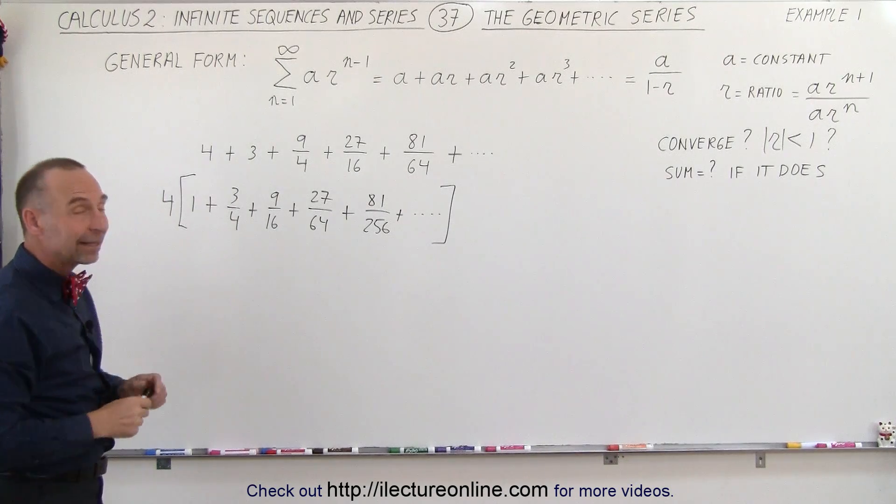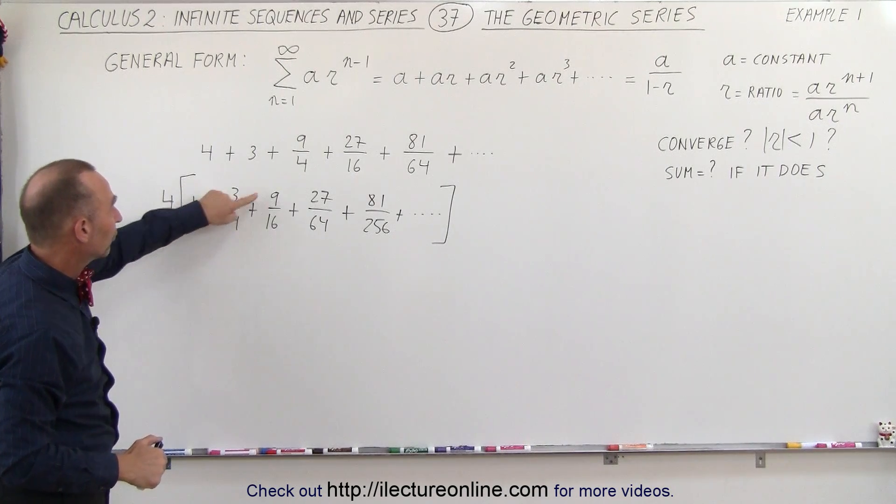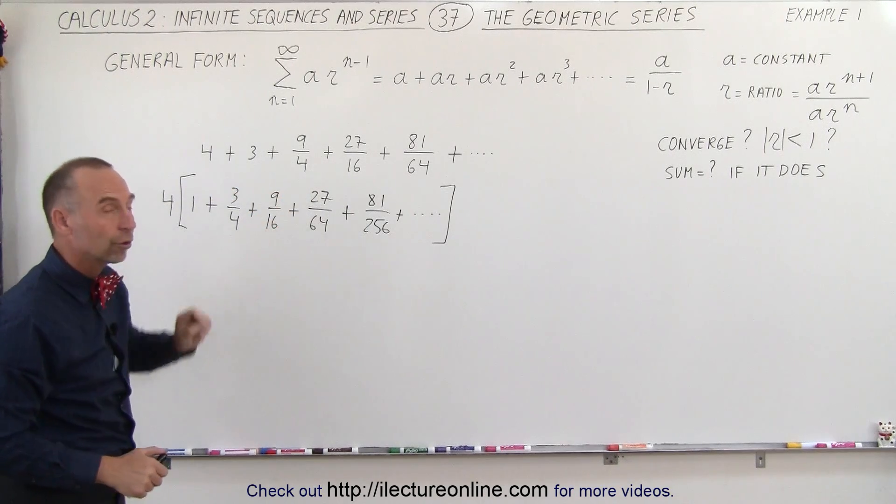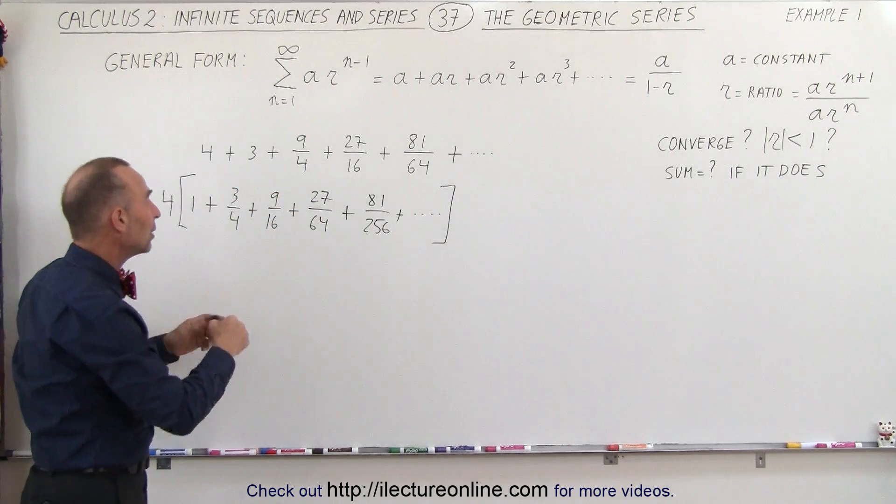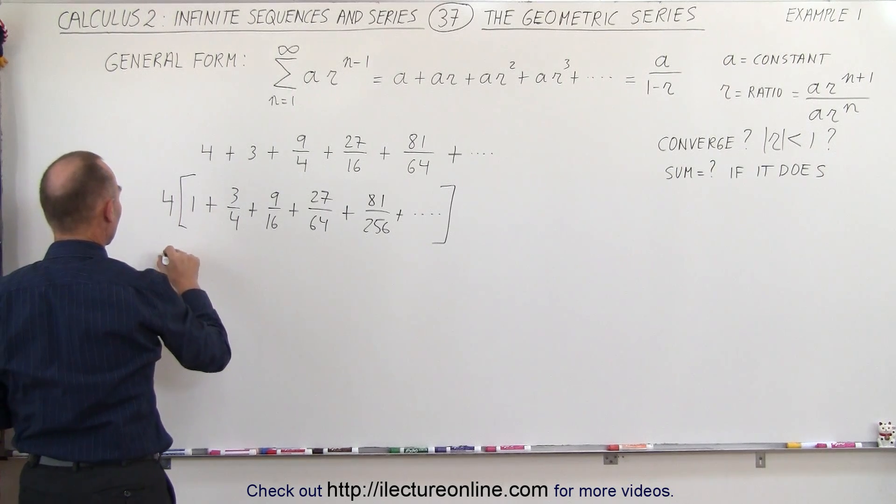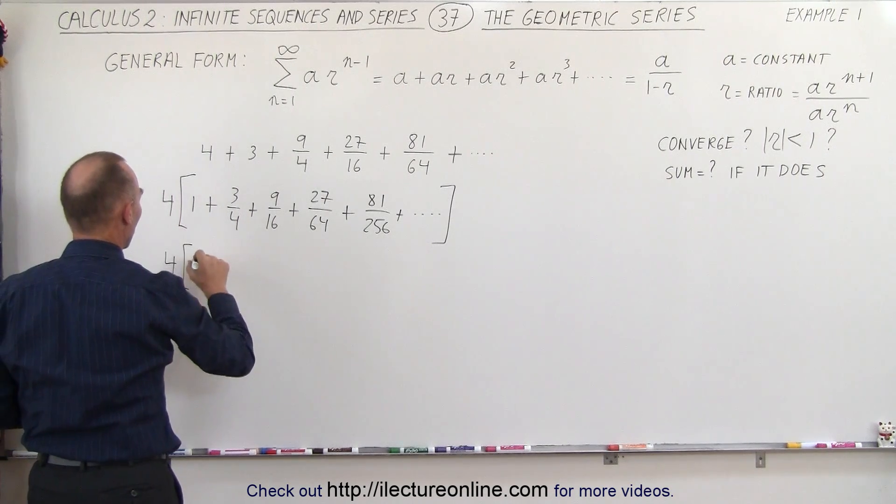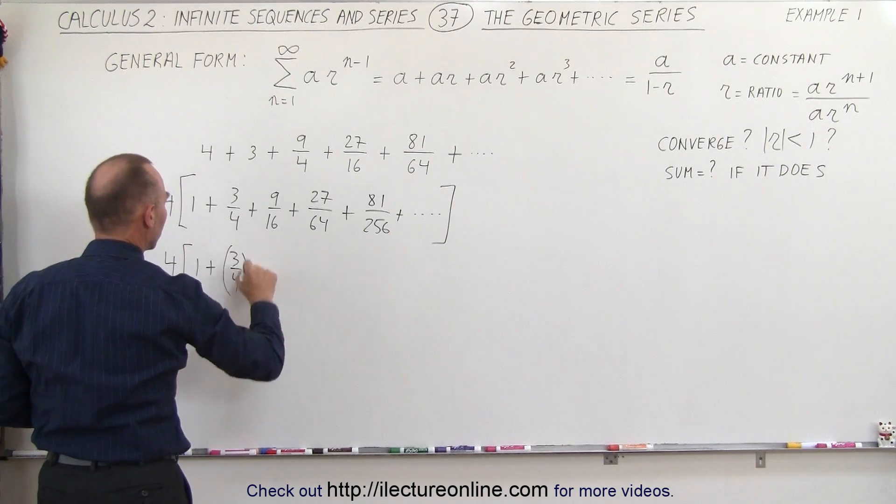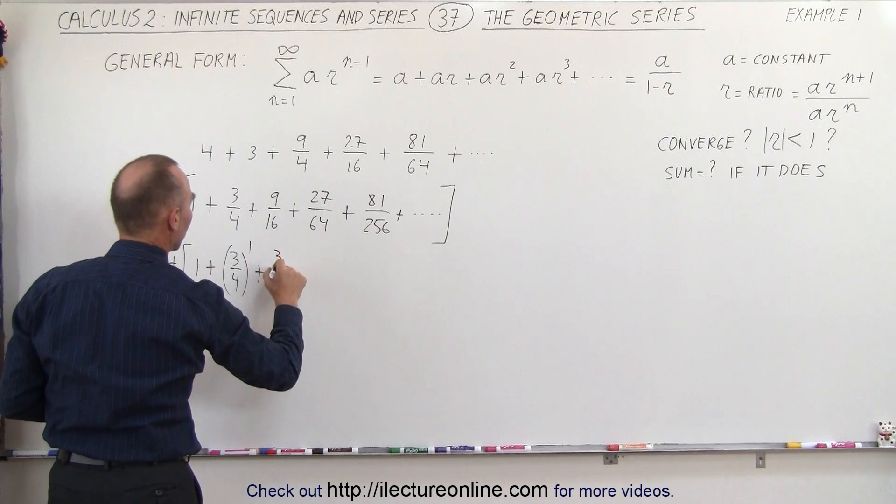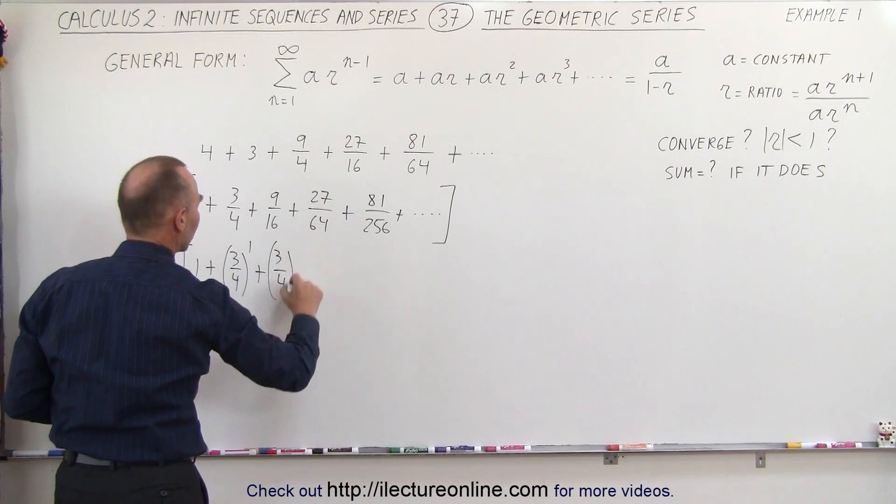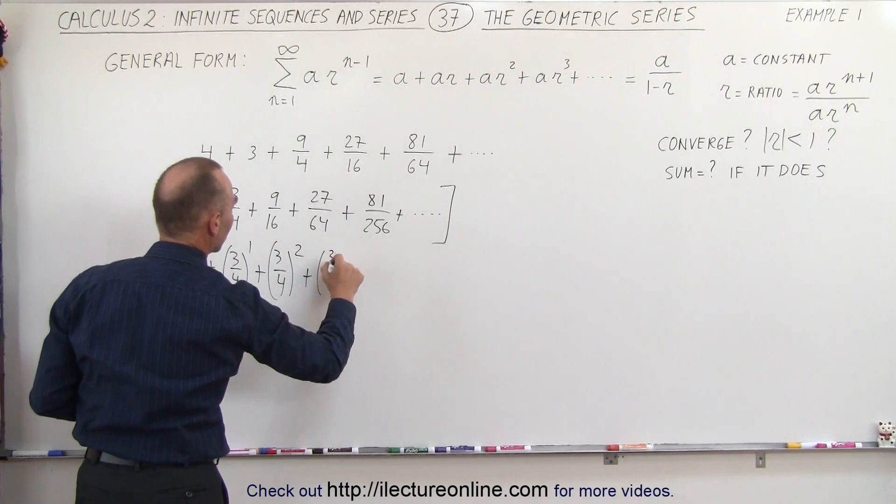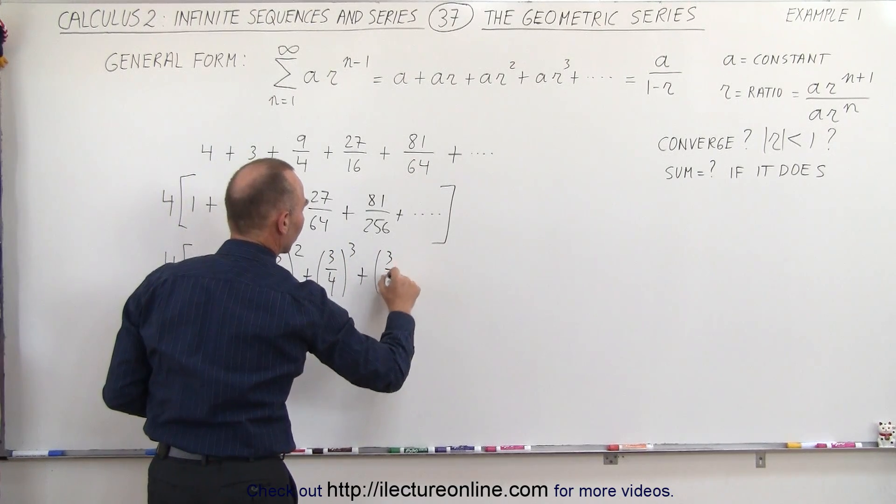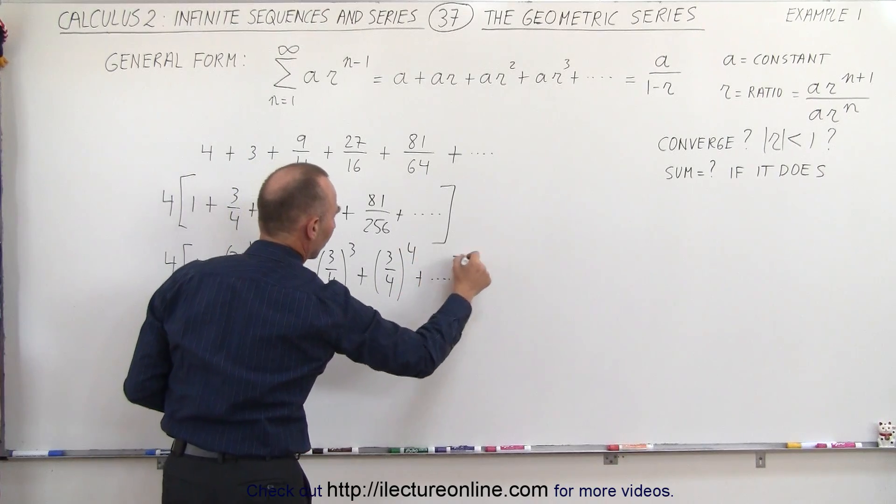Now we realize that we have 3 to the first, 4 to the first, 3 to the second, 4 to the second, 3 to the third, 4 to the third, which means we can now rewrite this series as follows. This can now be written as 4 times 1 plus 3 over 4 to the first power, plus 3 over 4 to the third power, plus 3 over 4 to the fourth power, plus and so forth.